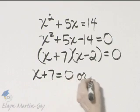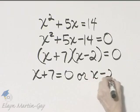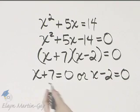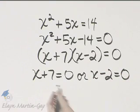So x plus 7 equals 0, or x minus 2 equals 0. And then solve each of these equations.